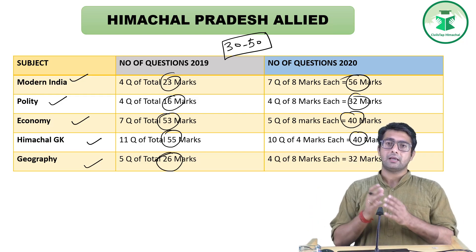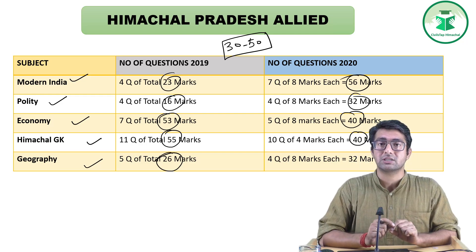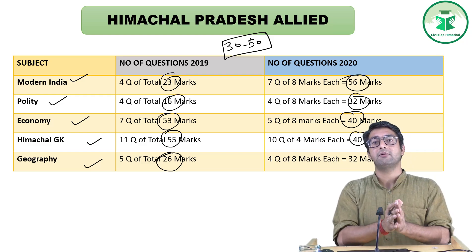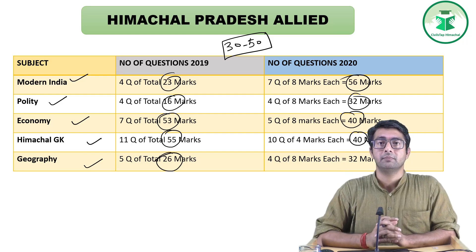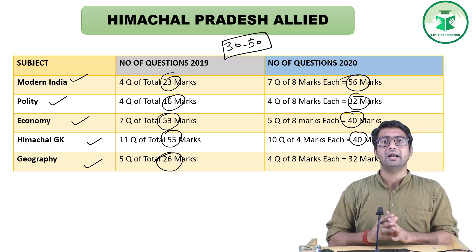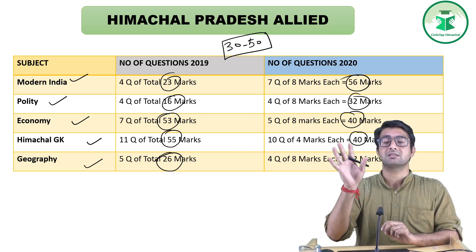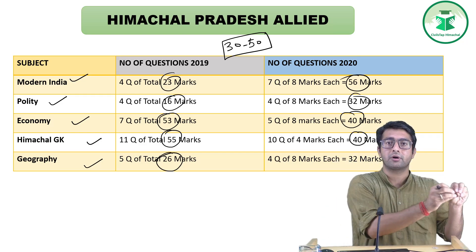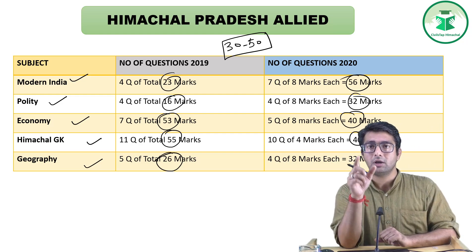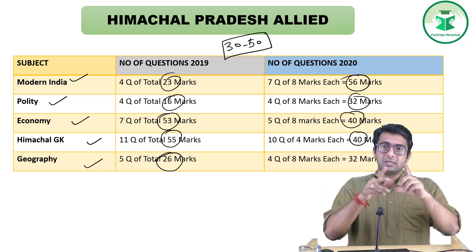Prelims और mains को अलग करके मत देखो — यह गलती बहुत लोग करते हैं। पूरे Himachal में बच्चे केवल prelims की तयारी करते हैं, इसलिए mains में fail होते हैं। Smart aspirant वो है जो holistic plan बनाए — जिस साल prelims निकले, उसी साल mains भी qualify हो। शुरू से ही prelims + mains की एकसाथ तयारी करो।